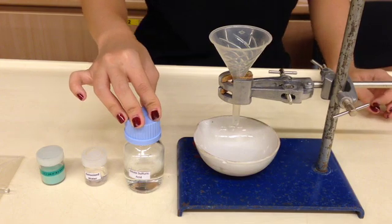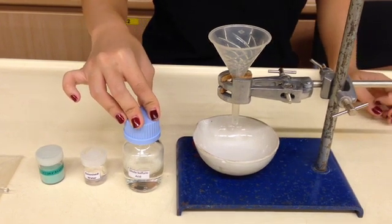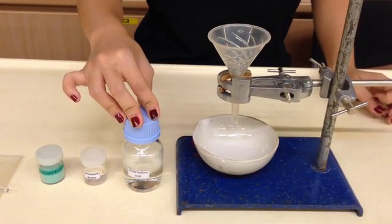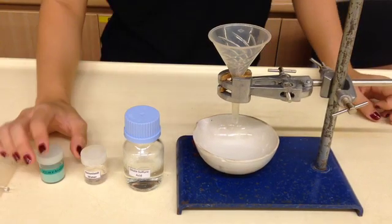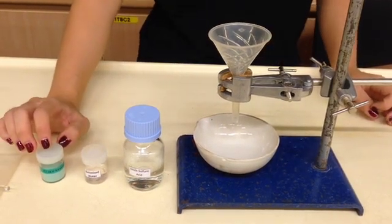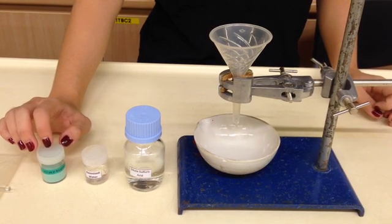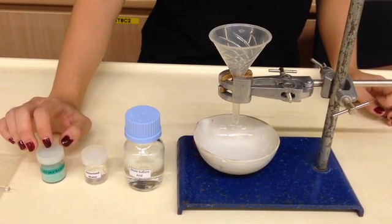So whenever we are preparing a soluble salt, we can use this method of adding excess of an insoluble reactant to an acid. So today, since we want to prepare copper 2 sulfate, we need something that contains copper 2 ion, as well as something that contains sulfate ion.